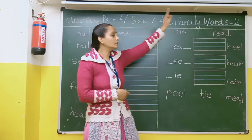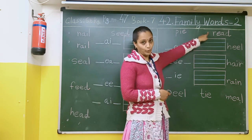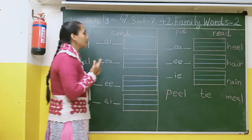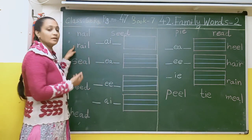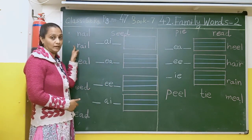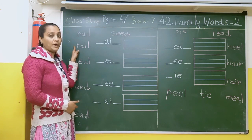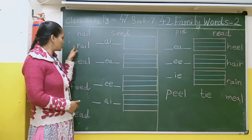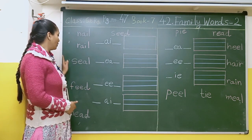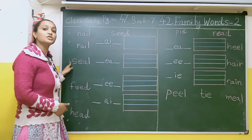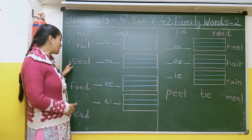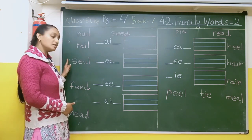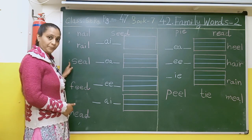After that, here the girl is reading a book — woh read kar rahi hai, padh rahi hai. After that, here there is an image of a rail — yahan rail bichhi hai jiske oopar train chalti hai. After that, here there is an image of a sea animal — jho water animal hai.